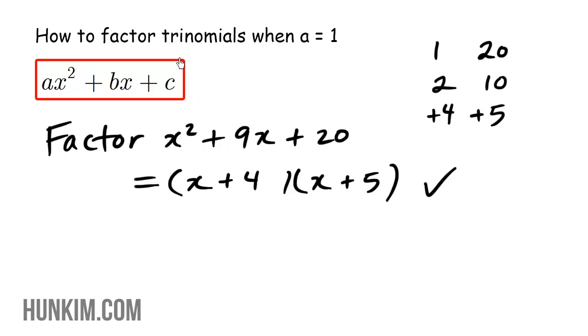So the key to factoring trinomials when a equals one, this simple type trinomial factoring, is to write these two giant brackets, figure out the first, what times what becomes this first part here, and figure out these missing values by asking the question: what times what becomes this value, the C value, yet add to be the middle part.